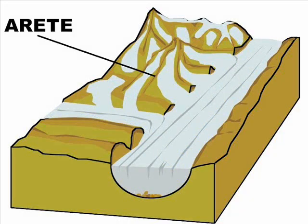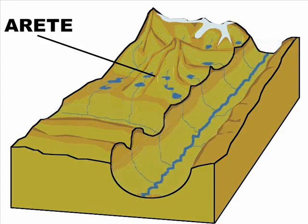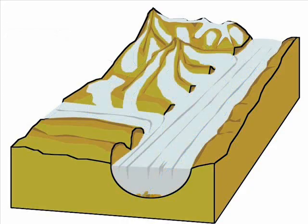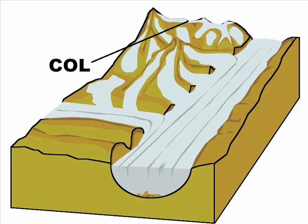Arete. An arete is a sharp, knife-like divide or crest formed between two cirques by alpine glaciers. Col. A natural pass or low notch in an arete between opposed cirques.